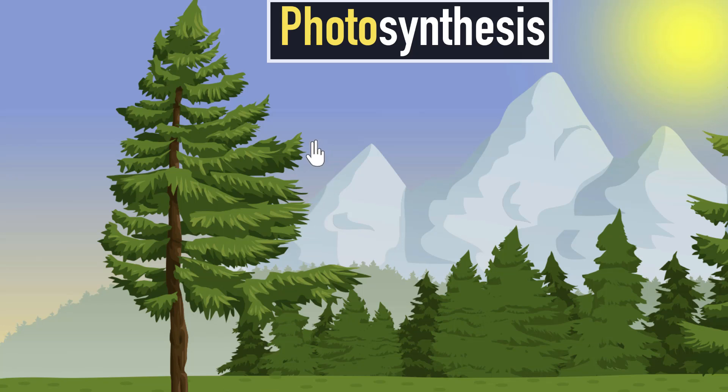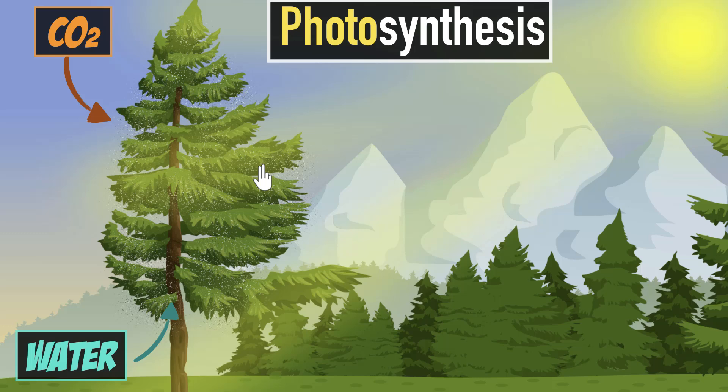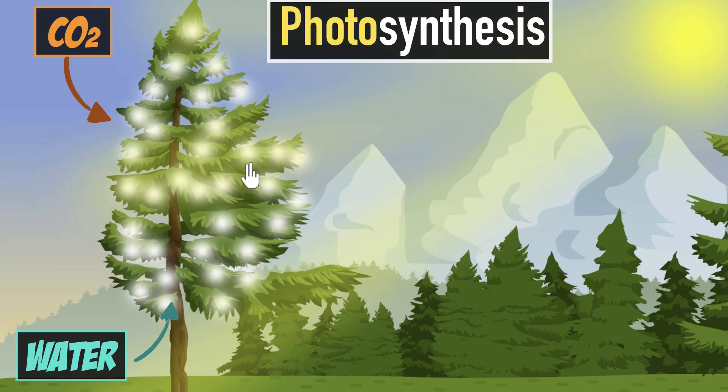Photosynthesis is pretty awesome. It is a process by which all the plants and trees that you find all around you are able to take in water and carbon dioxide from their surrounding, and then use the energy of the sun to produce sugar. And the sugar that they produce is called glucose.